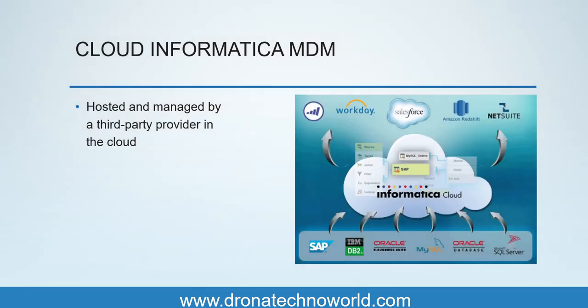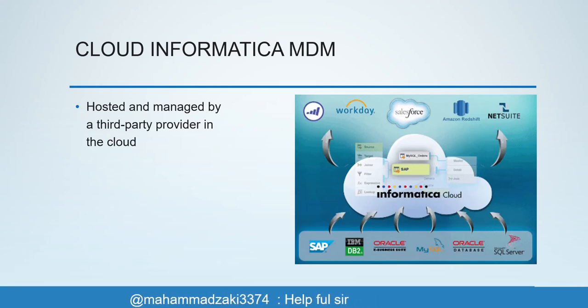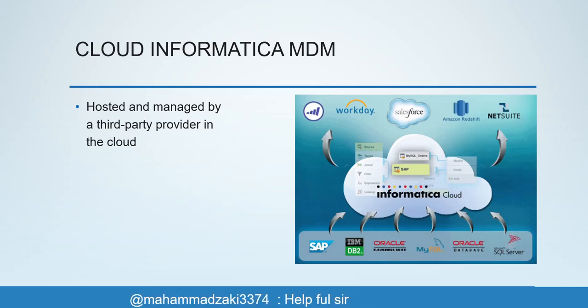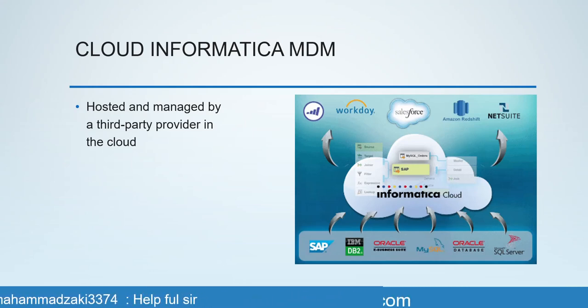The third category is Cloud Informatica MDM. In this case, we need to work with Informatica to get the software, licenses, etc. But we don't have to worry about Linux servers and databases — those will be installed on the cloud provided by Informatica. So Informatica will provide the infrastructure and also provide the software, but we have to work with Informatica to install the software in the cloud. These are the three different implementations: on-premise, SaaS, and the cloud version.